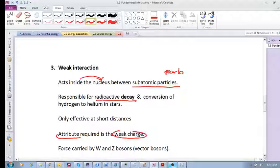inside the nucleus, and the gauge particles are these W and Z bosons, or vector bosons. These are the particles that carry this kind of interaction.